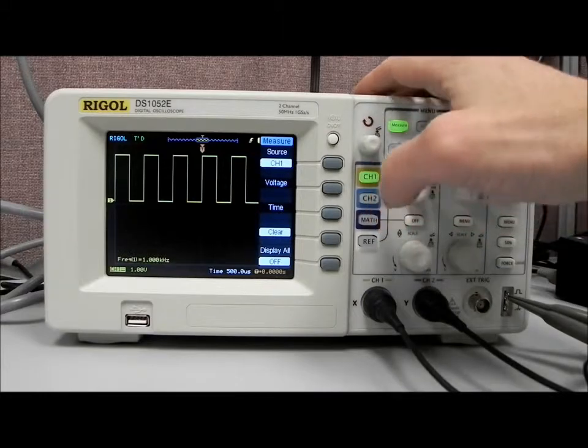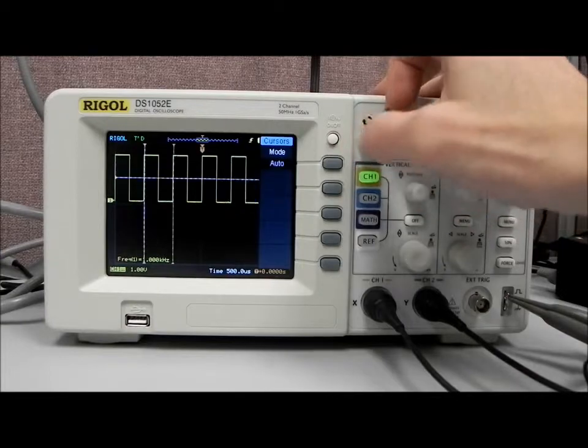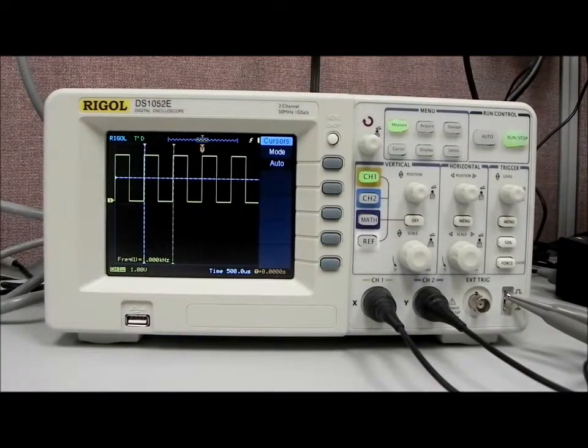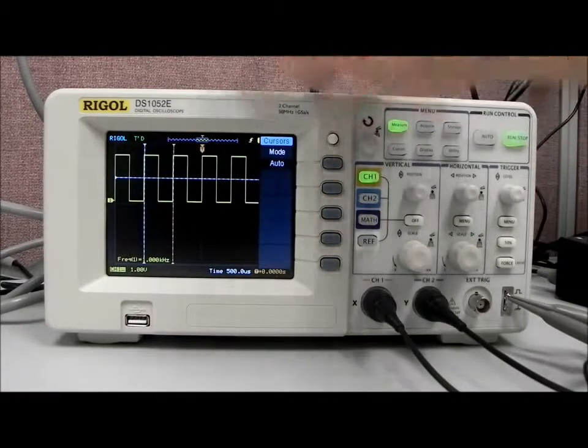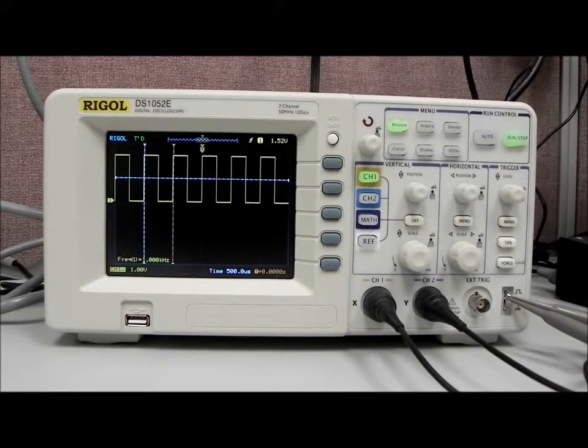And then I'm also going to go to cursor, and I'm going to hit auto. And now it's going to put the cursors on the screen in the position that we're actually taking the measurement. So if you have questions about where the measurement is being taken, you can enable the cursors and hit that auto mode. And that's going to align the cursors on the screen, and you'll be able to tell exactly where on that waveform that frequency measurement is going to be made.